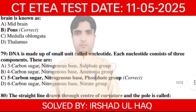DNA is made up of small units called nucleotides. Each nucleotide consists of three components: a five-carbon sugar, a nitrogenous base, and a phosphate group. C is the correct option.